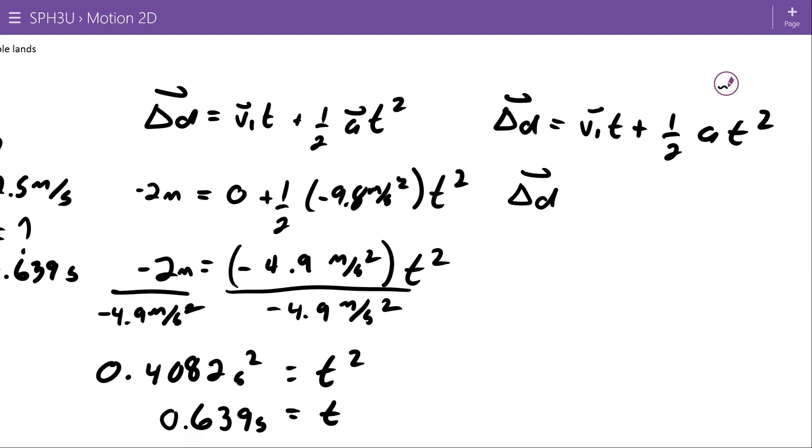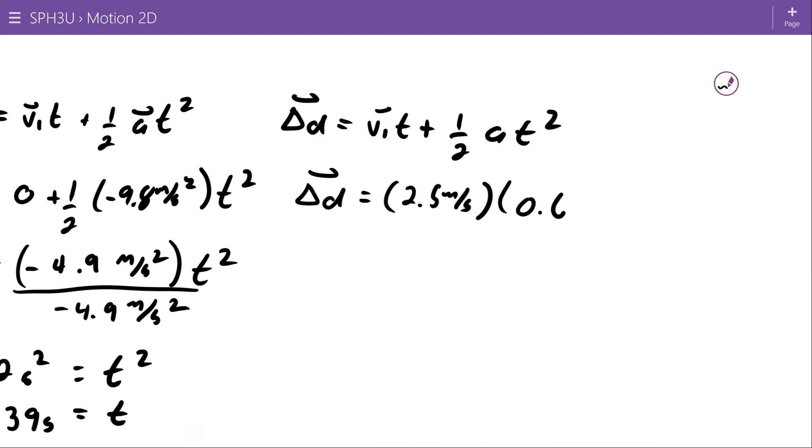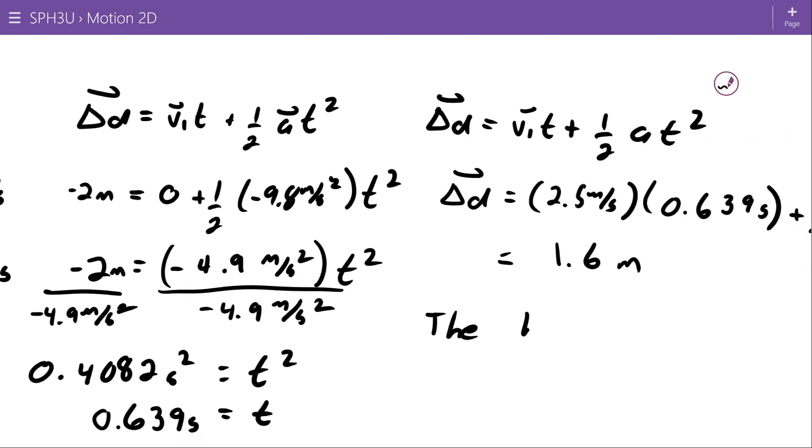My displacement is equal to my initial velocity which is 2.5 meters per second times my time, 0.639 seconds. And here my acceleration is zero. So I used a formula that I didn't need to use, but since this term has a zero in it, it just goes away anyways. And at this point it turns into the simpler equation. Multiplying those two together I get 1.5, well that's pretty close to 1.6 meters. The second can cancel. So the horizontal range is 1.6 meters.